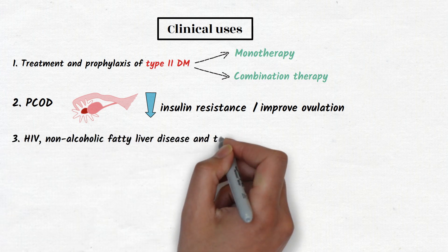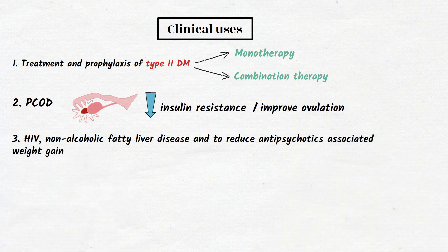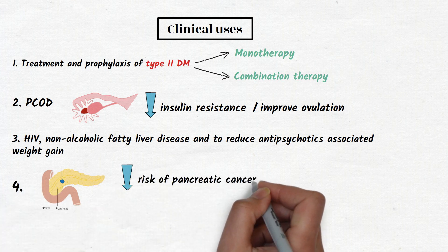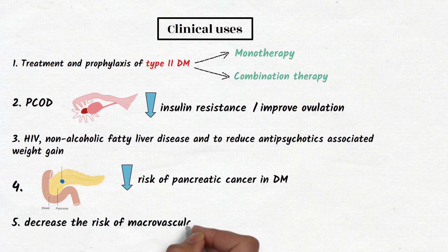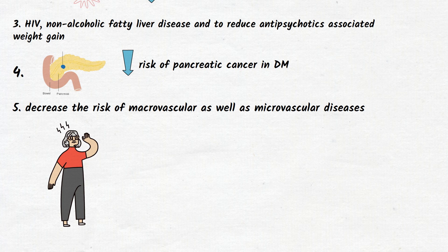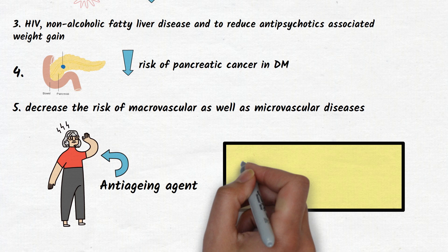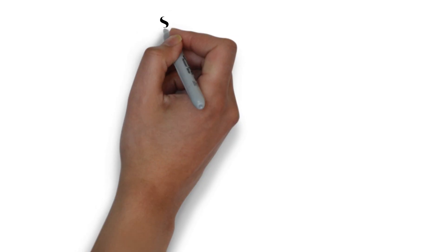Metformin is used in HIV, non-alcoholic fatty liver disease, and to reduce antipsychotic-associated weight gain. It is associated with a decreased risk of pancreatic cancer in diabetes mellitus. Metformin therapy also decreases the risk of macrovascular as well as microvascular diseases, and is currently under trial as an anti-aging agent. Notably, metformin did not prevent diabetes in older or leaner pre-diabetics.